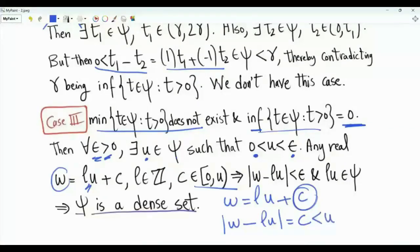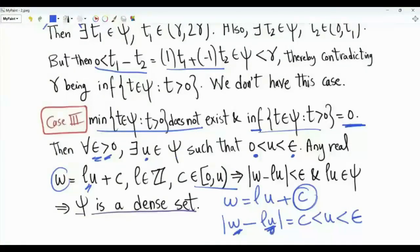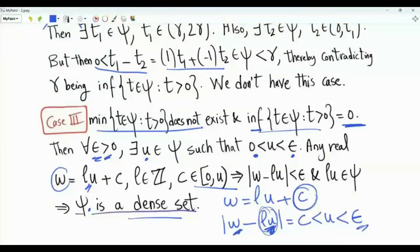And u is strictly less than epsilon. The idea is: give me any positive epsilon, no matter how small, and a general real number omega — there is always a number l·u in set epsilon within distance epsilon of omega. Why are we sure l·u is in epsilon? Because u is in epsilon, and any integer multiple of u is in epsilon. This means epsilon is a dense set, because you can find an element in epsilon arbitrarily close to any given real number.